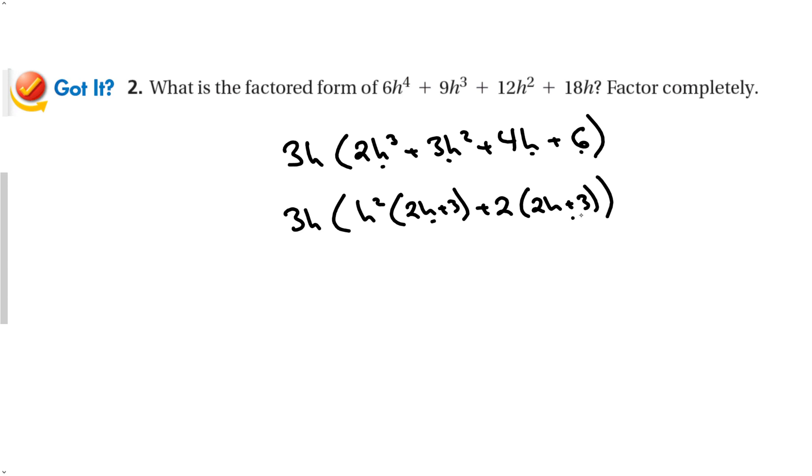That's good. If these two terms did not match exactly, either this method doesn't work, or we did something wrong. And in this section, that means we did something wrong. 3h times h squared plus 2 times 2h plus 3 would be my factored form and my answer.